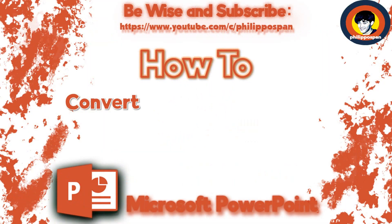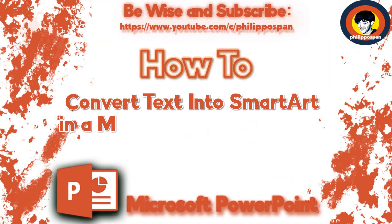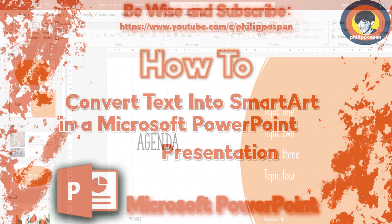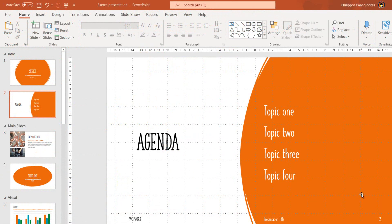How to convert text into SmartArt in a Microsoft PowerPoint presentation. What is SmartArt? It is a graphic that represents visually our information and ideas in a PowerPoint presentation. We can create one by selecting a layout that fits our message, or even convert existing text into a SmartArt.